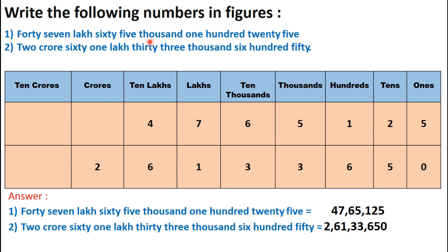Now let us try to solve the following sums. Write the following numbers in figures. Question number 1 is 47 lakh 65125. We will first create columns according to their place value. Now let us write the number in the place value chart. 47 lakhs means 4 under 10 lakhs and 7 under lakhs. Then 65,000 means 6 under 10 thousands and 5 under thousands. And 125 means 1 under hundreds, 2 under tens, and 5 under ones column.